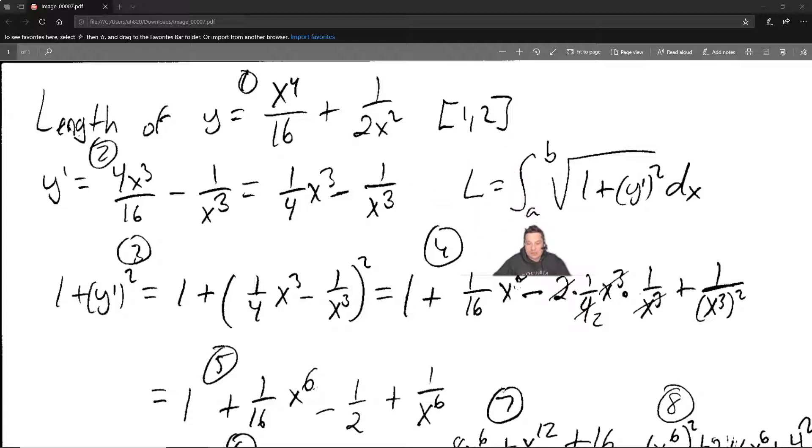So first I'm going to use this formula, the integral from a to b to find the length of the root here, and that's 1 plus y prime squared dx. Keep that in mind, it's a formula we need to make that work. So what we need to do is find y prime first and plug it into the root symbol there.